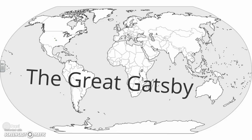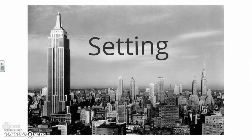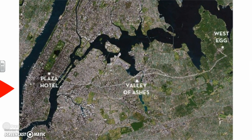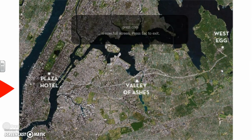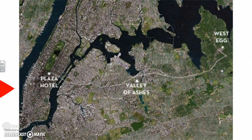Looking at the novel itself, we are set in New York City in the very early 1920s, specifically over one summer. This is a map of part of New York that shows up in the novel. The Plaza Hotel is one of our main settings, on the island of Manhattan. The main action of the book happens out on what would today be called Long Island — specifically West Egg and East Egg. The Valley of Ashes is a very desolate area you have to travel through to get from Long Island into Manhattan. The lines on the map are the train routes.